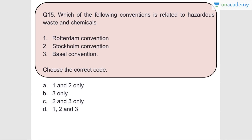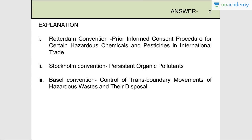Question number fifteen: Which of the following conventions are related to hazardous waste and chemicals? All three are related - Rotterdam, Stockholm, and Basel. The Rotterdam Convention covers prior informed consent for certain hazardous chemicals and pesticides in international trade. The Stockholm Convention is related to persistent organic pollutants. The Basel Convention concerns the control of transboundary movements of hazardous waste and their disposal.